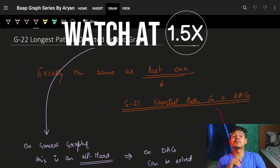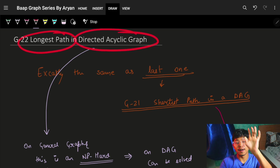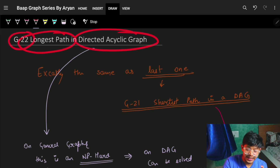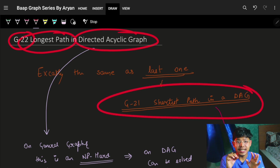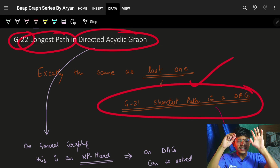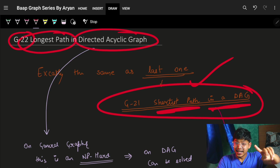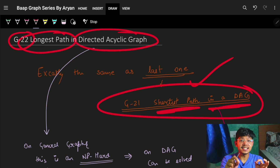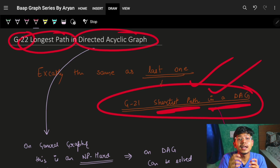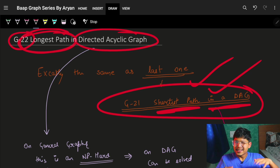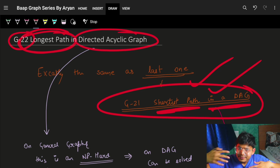Hello guys, good morning, welcome to another new video. In this video we will see the problem: longest path in a directed acyclic graph. If you have not watched lecture 21, go and watch it. If you have watched it, please pause this video right here and see if you can figure out how to find the longest path — same short/long, less/more, negative/positive — that's how you can simply solve it.